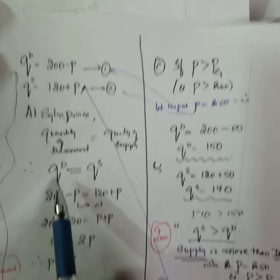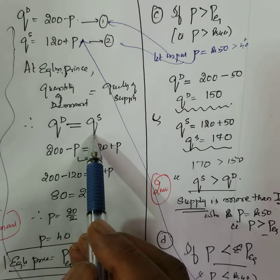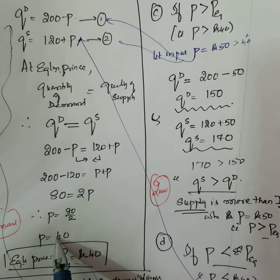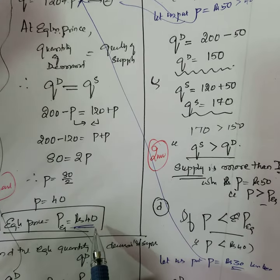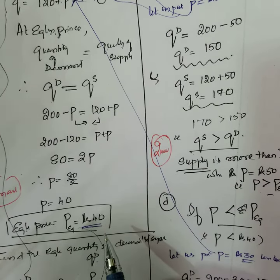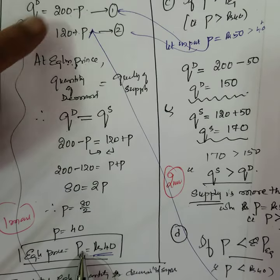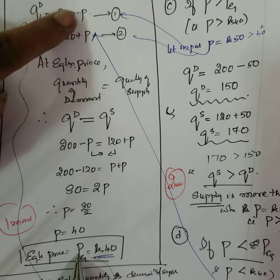Equate these two equations, Qd equal to Qs. You substitute, find out P. This P is called equilibrium price. Then put that same P, wherever P you put, P equal here.